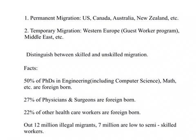Now let us focus on what is happening in the US. 14% of the total US population in 2010 was foreign-born. Since the total US population was 308 million people, that means about 42 million people in the US were foreign-born. What are some of the facts relating to labor migration to the US? 50% of PhDs in engineering — including computer science, math, and so on — are foreign-born.